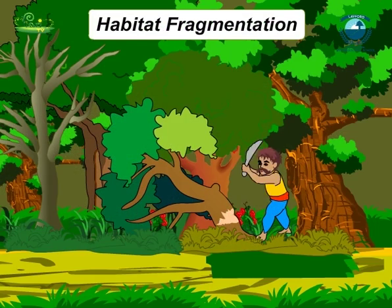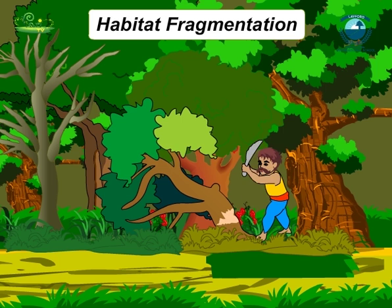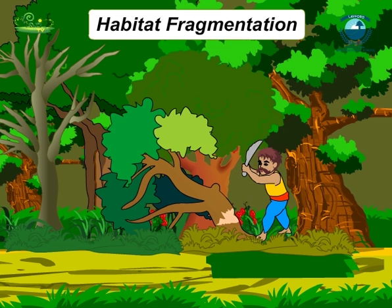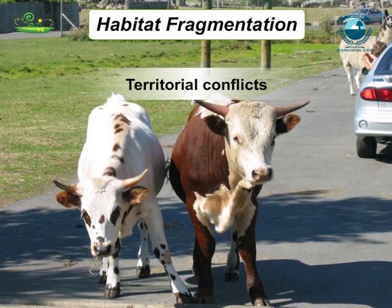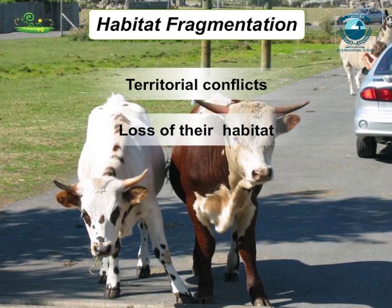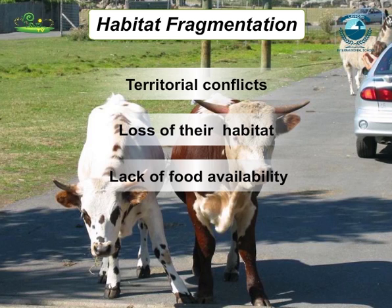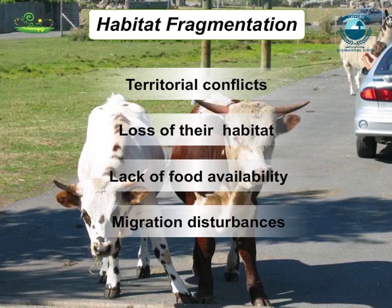Habitat fragmentation: Cutting of forests leads to extinction of biodiversity — microbes, plants, insects, animals and indigenous people — as their habitats get destroyed. This forces animals to enter habitats which are already occupied, posing problems such as terrestrial conflicts, loss of habitat, lack of food availability, and migration disturbances.